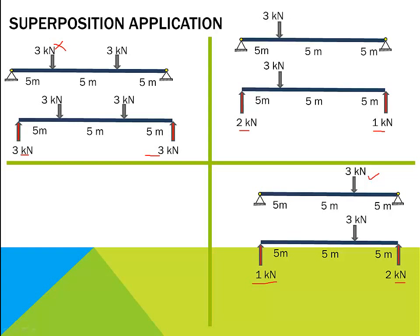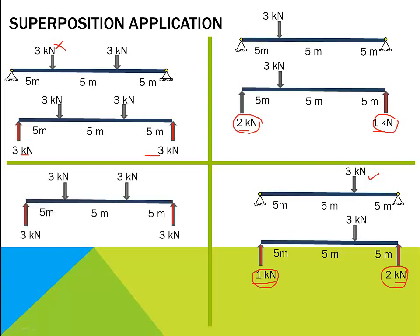To find the combined effect of both loads, add the reactions from both cases. This one plus this one for left support and this one plus this one for the right support. This will give us both reactions are 3 kN. That is 2 plus 1 kN for left and 1 plus 2 kN for right.